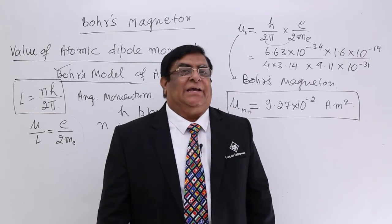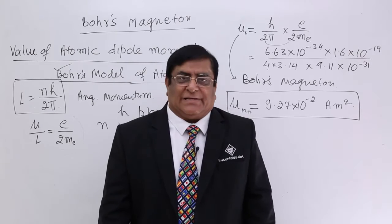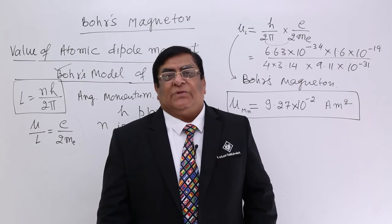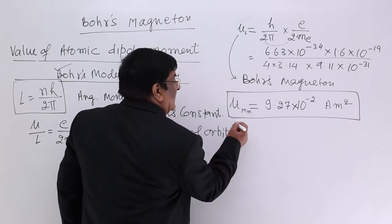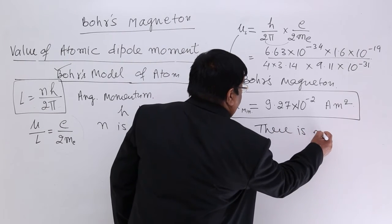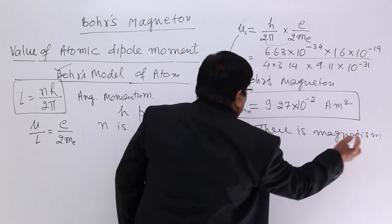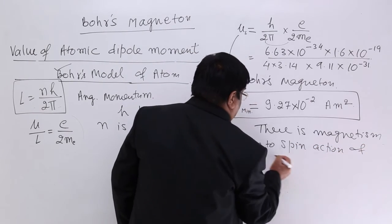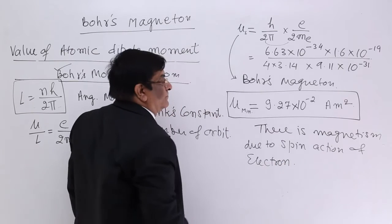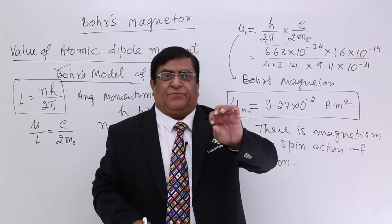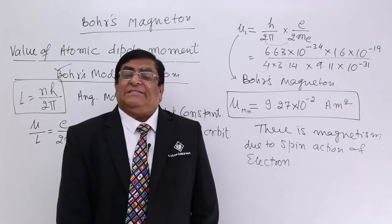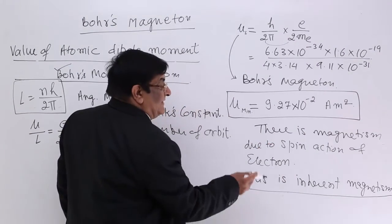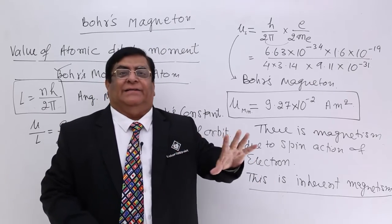Then the question is: is there any magnetism due to the spinning action of the electron? The answer is yes — there is magnetism due to the spinning action of the electron, and that is fundamental magnetism. There are two types of spins of electrons. This spin action creates magnetism, and this is known as fundamental magnetism. This is taken as the source of magnetism in materials.